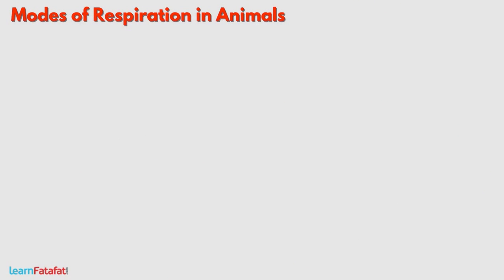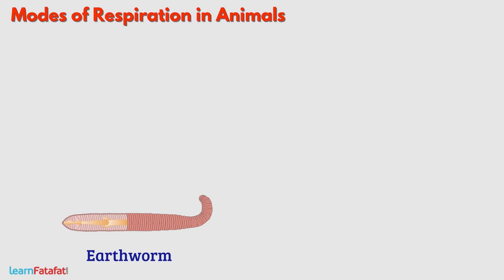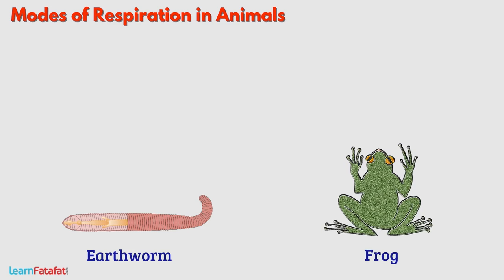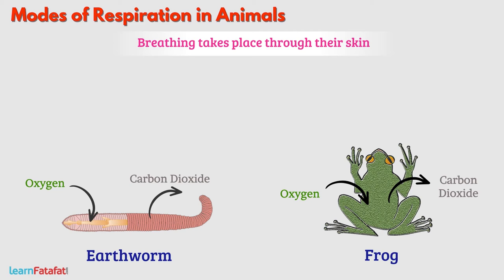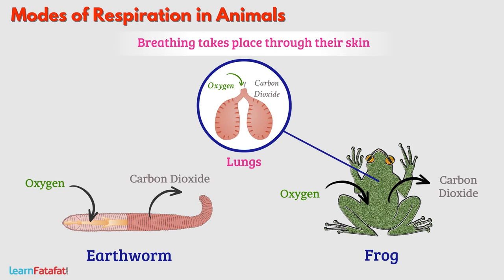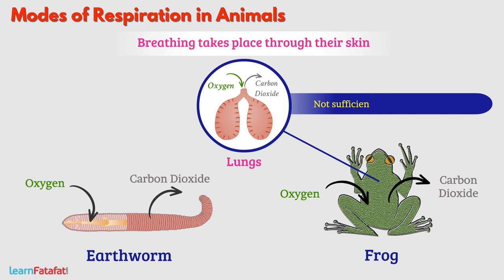Some animals such as earthworm and amphibians like frog have very thin skin. With this skin, they absorb oxygen from air and remove carbon dioxide to air. Thus, gaseous exchange, i.e., breathing, takes place through their skin. Note that frogs have lungs for breathing; however, these are not sufficient to fulfill their oxygen demand.